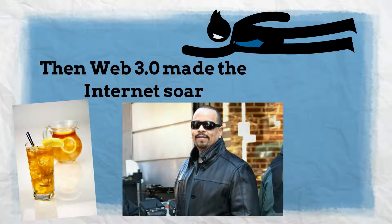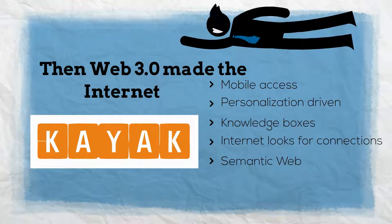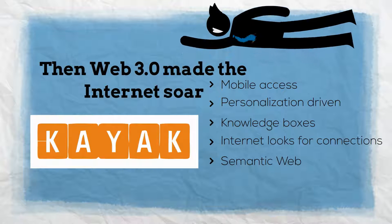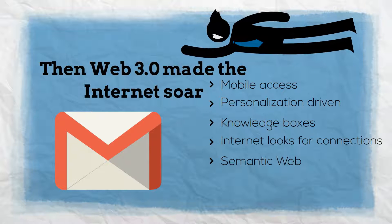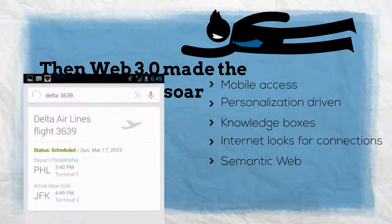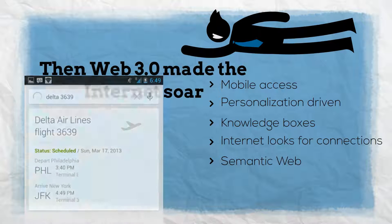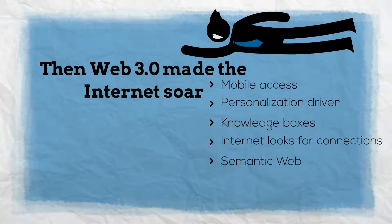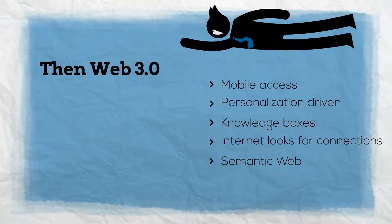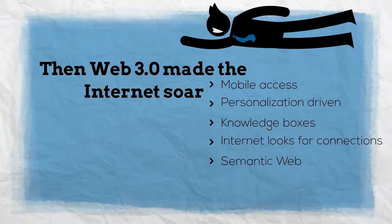An example of Web 3.0 is that I purchased airplane tickets the other day and had the itinerary sent to my Gmail account. Then, on the day I was supposed to fly out, Google sent me updates on my phone telling me whether the flight was on time and what time I should leave for the airport. Can you see how many connections were made there automatically without me having to do the work?